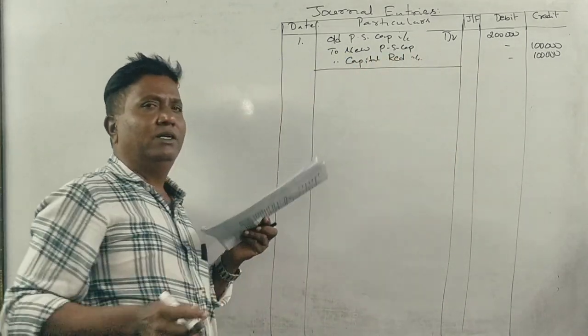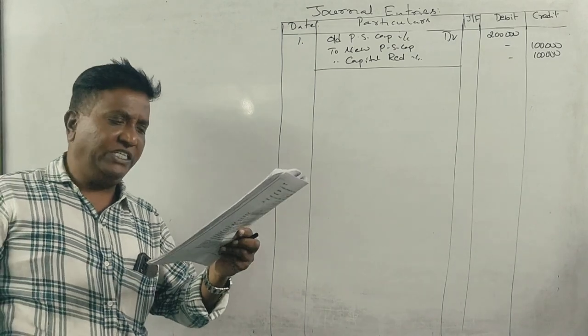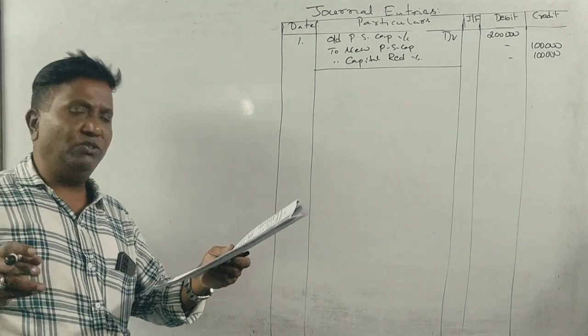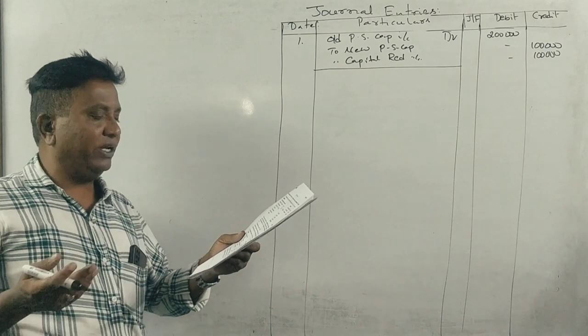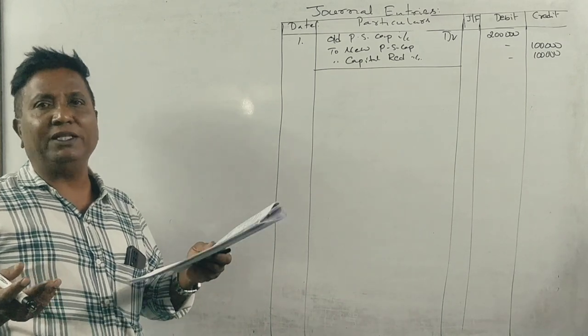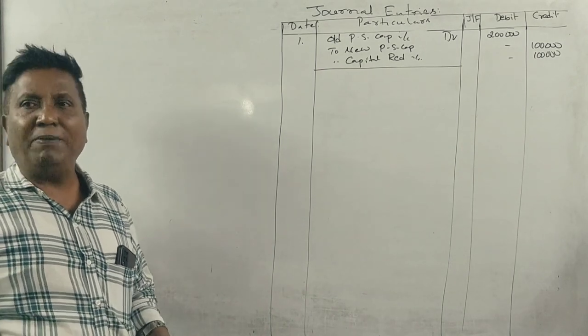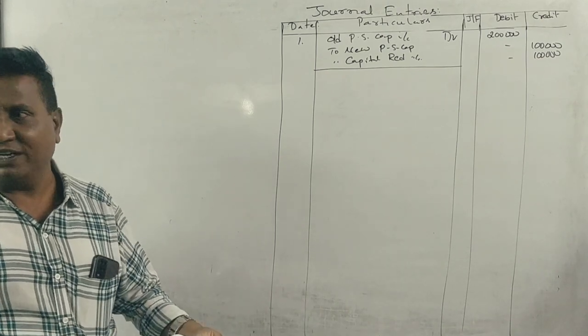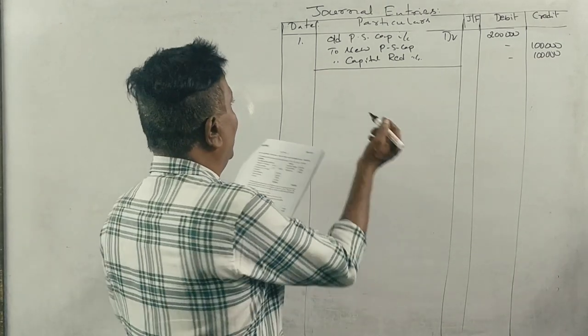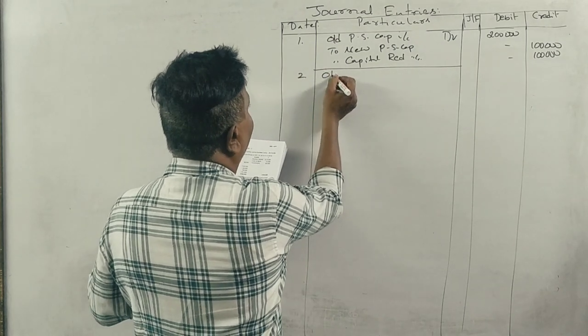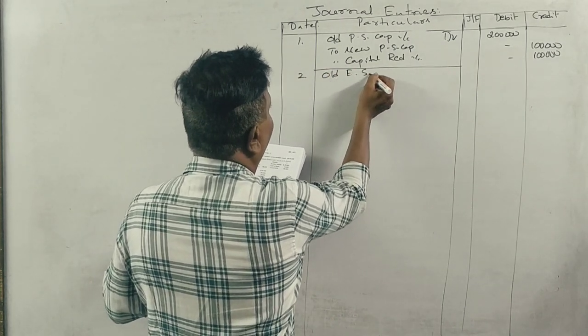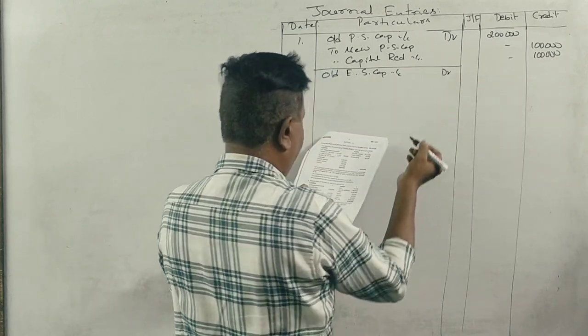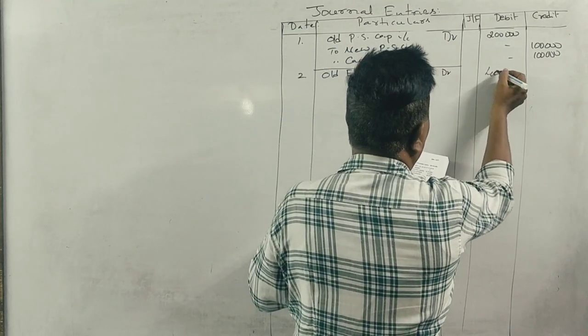Second adjustment: equity shares to be reduced to 25 each fully paid. Current equity shares are 4 lakhs at 100 each. So the entry is: old equity share capital account debit 4 lakhs.